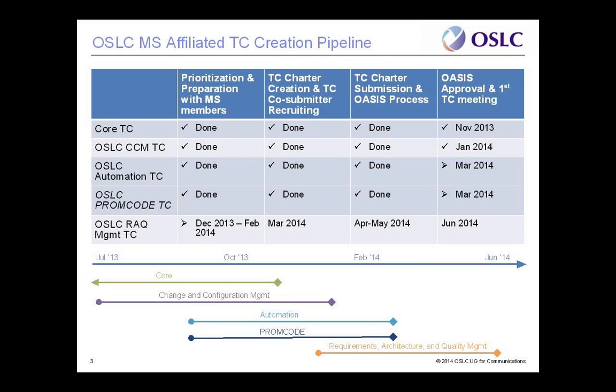TC is the term OASIS uses, similar to work group at other organizations. Those two TCs have gone through their call for comment, and the call for participation should open soon. That would mean you'd be able to join, and they are looking to have their first meetings in March. We are also in the process of putting together a Requirements Architecture and Quality Management TC.